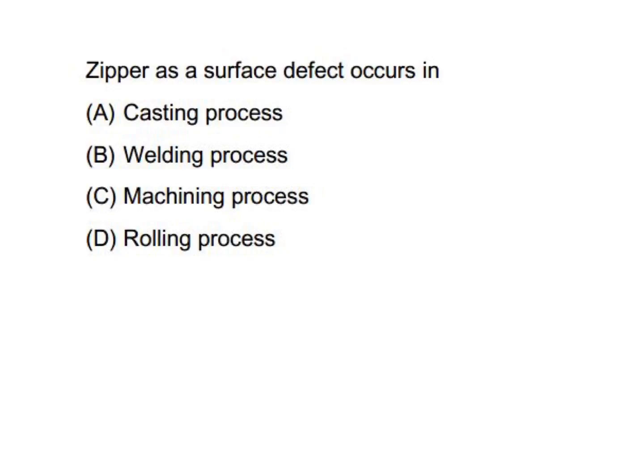Zipper as a surface defect occurs in which process? A: casting? No. B: welding? No. C: machining? No. It's a rolling defect. Rolling defects include zipper, wavy edge, cracks, and alligator ring.